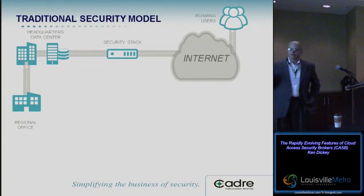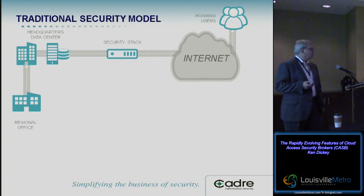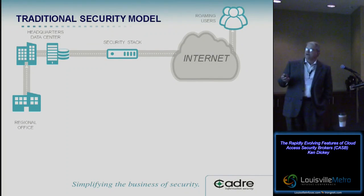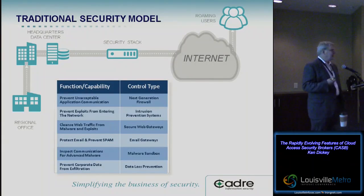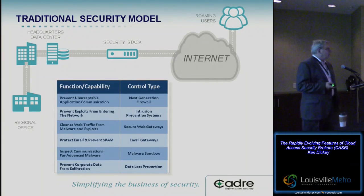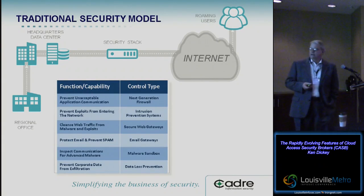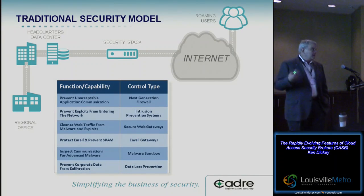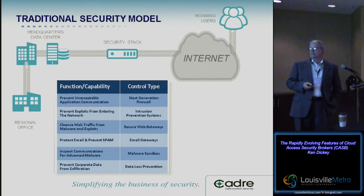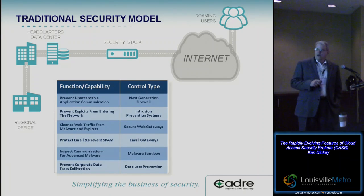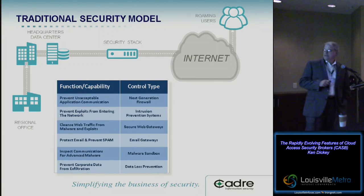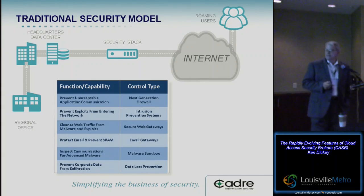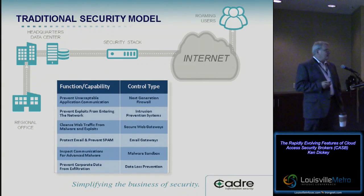We're all familiar with the traditional security model that we've all spent our careers implementing and maintaining. We have our data center, regional offices, and a security stack that consists of many controls — next-gen firewalls, IDS, IPS systems, secure web gateways or proxies, email gateways, malware sandboxes, and DLP solutions — to make sure we know what's going on and can stop malicious behaviors.